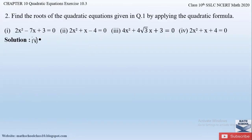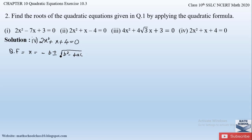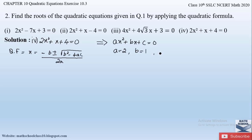The fourth part of question 2 is the equation 2x² + x + 4 = 0. We apply the quadratic formula x = (-b ± √(b² - 4ac)) / 2a. Comparing with ax² + bx + c = 0, we get a = 2, b = 1, and c = 4.